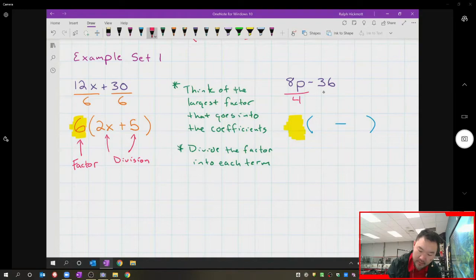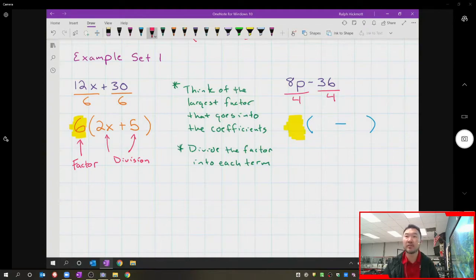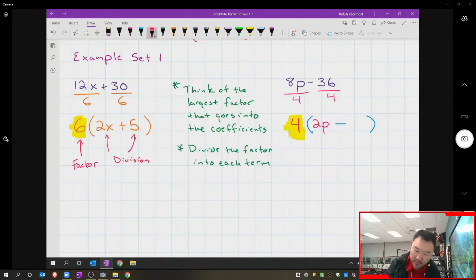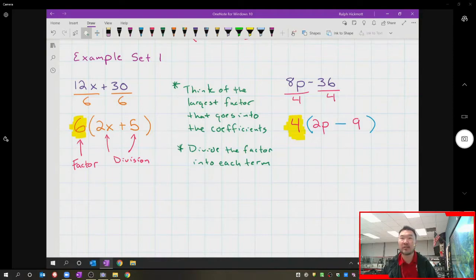Knowing your multiplication tables is really key here. Use a calculator to just kind of guess and check your way through. I'm going to take that 4 and put it on the outside. 8p divided by 4 is 2p, and 36 divided by 4 is 9, minus 9. Look at that, we are done. So 4 goes on the outside, 2p minus 9.